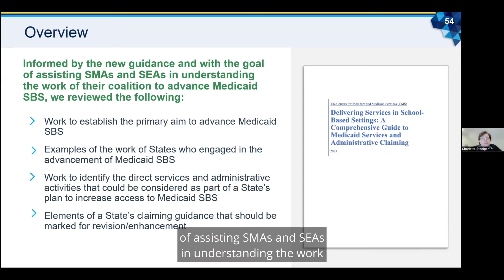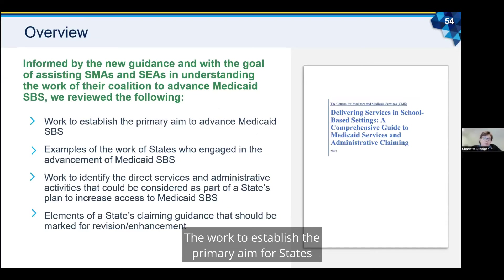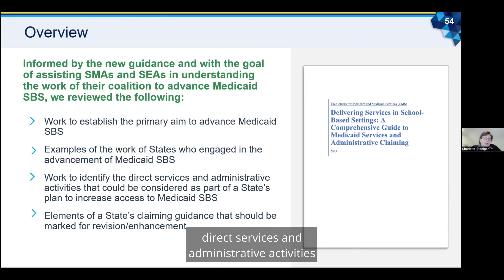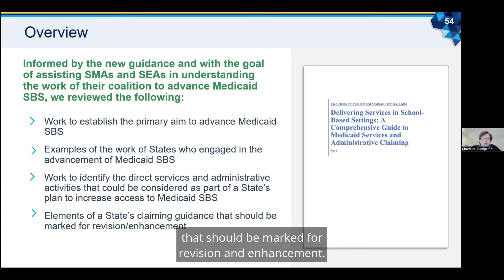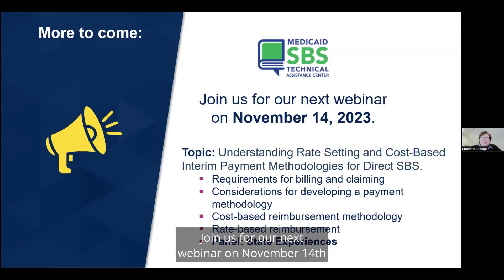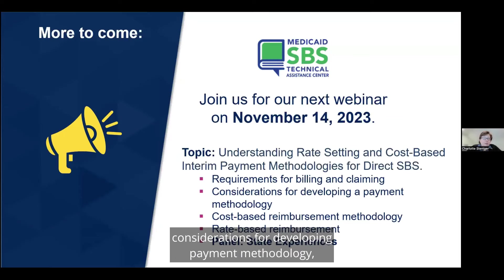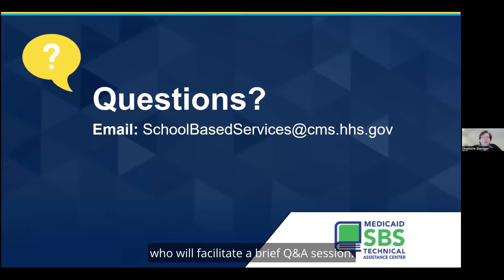Informed by the new guidance and with the goal of assisting SMAs and SEAs in understanding the work of their coalition to advance Medicaid SPS, we reviewed the work to establish the primary aim for states, examples of states who have engaged in the advancement of Medicaid SPS, direct services and administrative activities that could be considered part of the state's plan to increase access to Medicaid SPS, and elements of a state's claiming guidance that should be marked for revision and enhancement. Join us for our next webinar on November 14th from 3 to 4 p.m. Eastern time. The topic will be understanding rate setting and cost rate interim payment methodologies for direct SPS, including identifying requirements for billing and claiming, considerations for developing payment methodology, cost-based and rate-based reimbursement methodology, and a panel where states share their experiences.